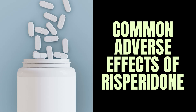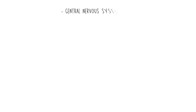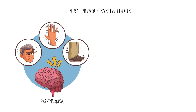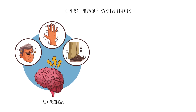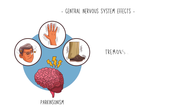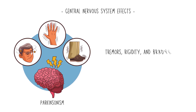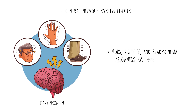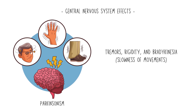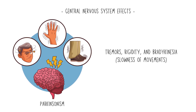Risperidone is well known to cause central nervous system side effects, which typically manifest as extrapyramidal symptoms, including parkinsonism — which includes tremors, rigidity, and bradykinesia, or slowness of movement.